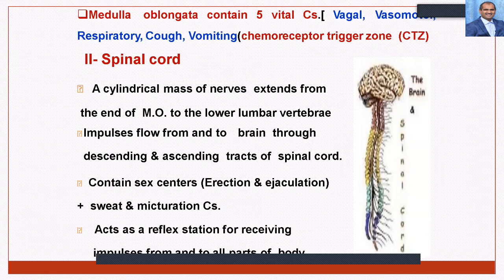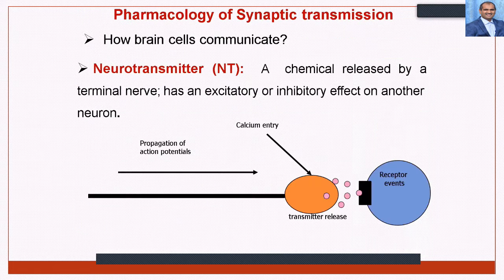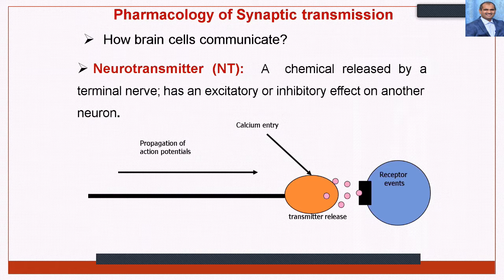Regarding pharmacology of synaptic transmission and how brain cells communicate: in the brain there are varieties of neurotransmitters, which are chemicals released by a nerve terminal having excitatory or inhibitory effects on another neuron. Propagation of impulses is mediated by calcium and neurohumoral transmission. Key CNS transmitters include GABA, glycine, dopamine, acetylcholine, noradrenaline, and many more.